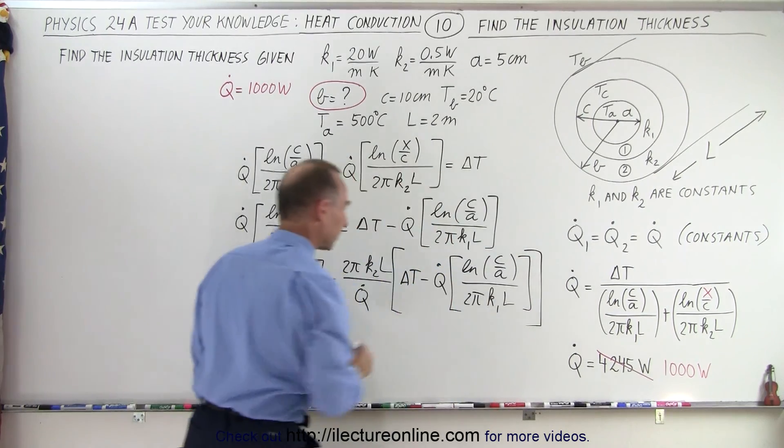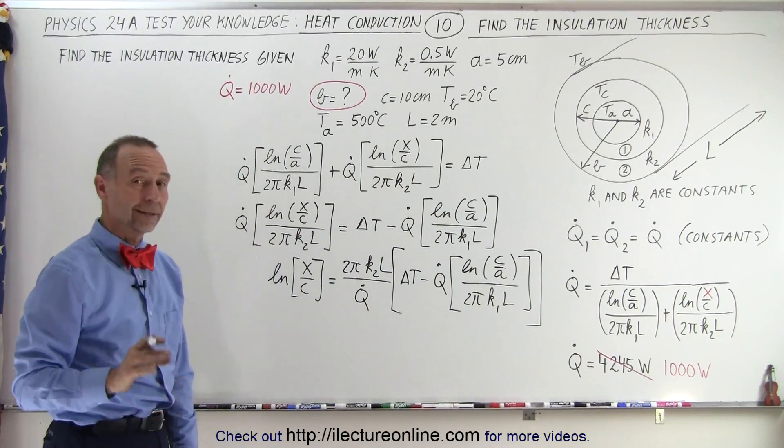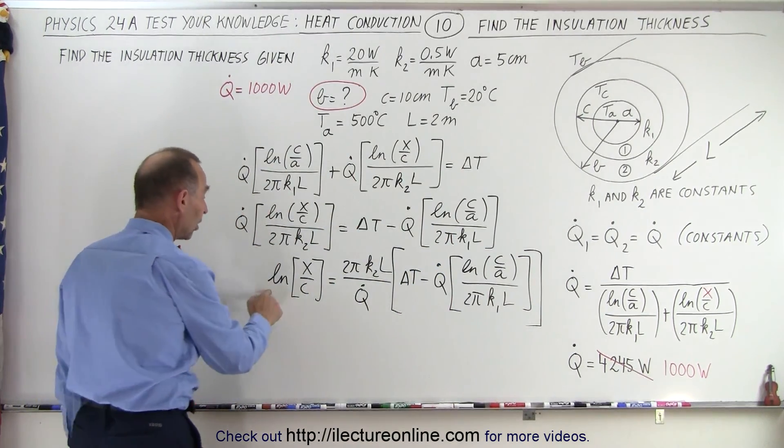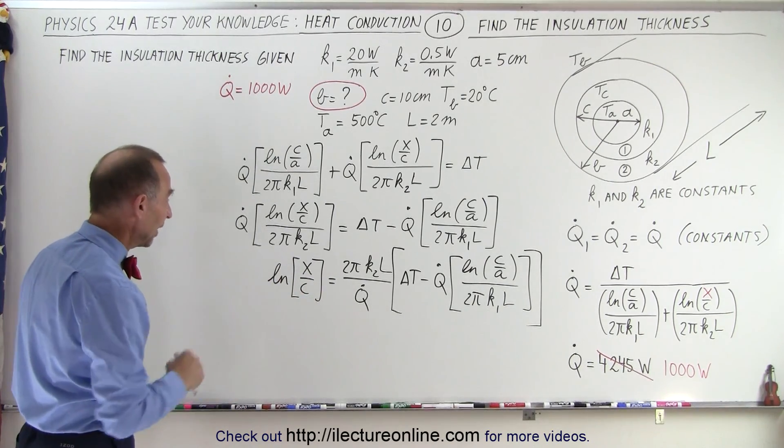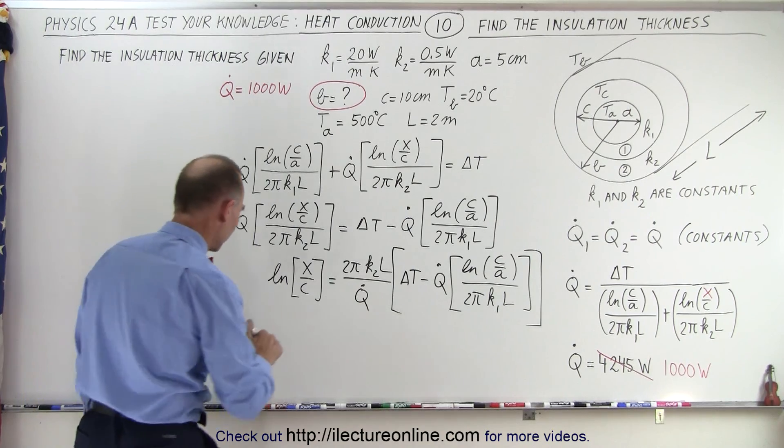And close the bracket. Alright, so let's first calculate the natural log of x over c, and from that we'll calculate the value for x. So let's plug in numbers and see what we get.